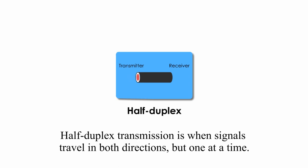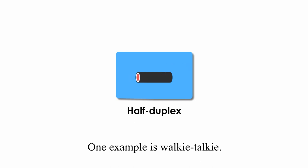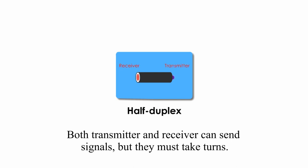Half duplex transmission is when signals travel in both directions, but one at a time. One example is walkie-talkie. Both transmitter and receiver can send signals, but they must take turns.